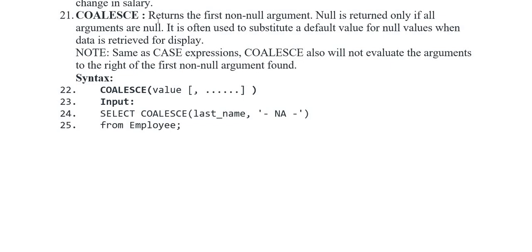Uske baad COALESCE - ye return karta hai first non-null argument ko. Null value returned only agar all arguments null ho jayen. Ye often use kia jaata hai substitute default value ke liye aur jab NULL data display ke liye retire karna ho. Note: some case COALESCE expressions mein aap evaluate nahi kar sakte arguments to the right of the first non-null argument found. Syntax: COALESCE(value, value, ...) and so on.